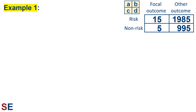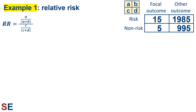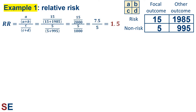We're going to use the letters A, B, C, and D to represent the values in each of the boxes in our contingency table. The relative risk is calculated using this equation. We can see that this calculates the probability of getting the focal outcome in the risk group and then divides by the probability of getting the focal outcome in the non-risk group. Plugging in the values gives us 15 divided by 2,000 in the numerator and 5 divided by 1,000 in the denominator, for a relative risk value of 1.5.